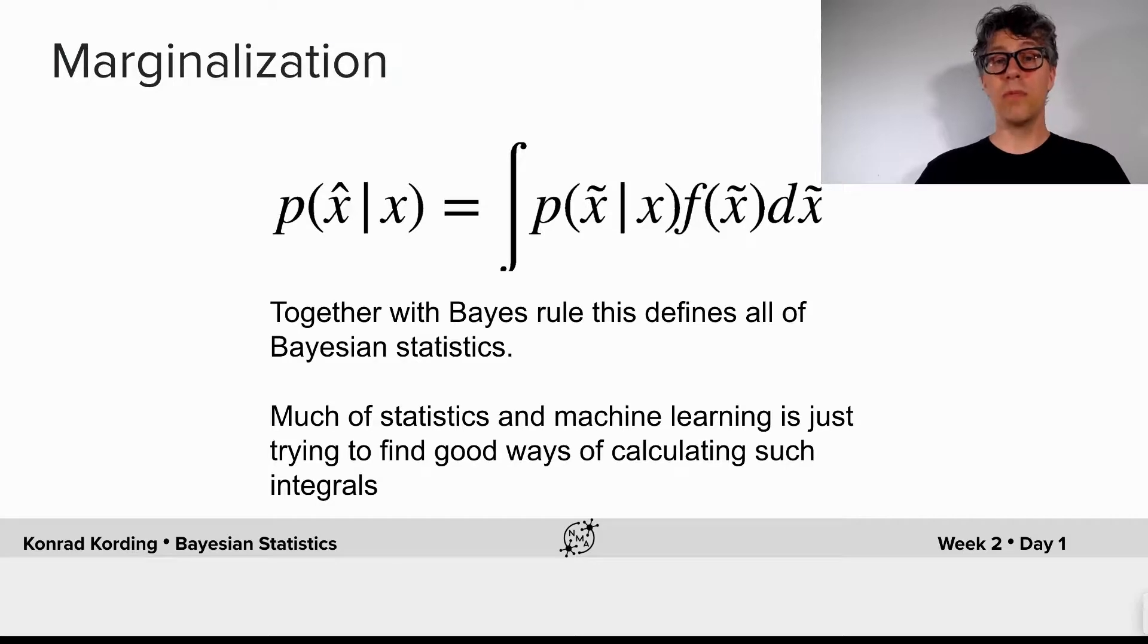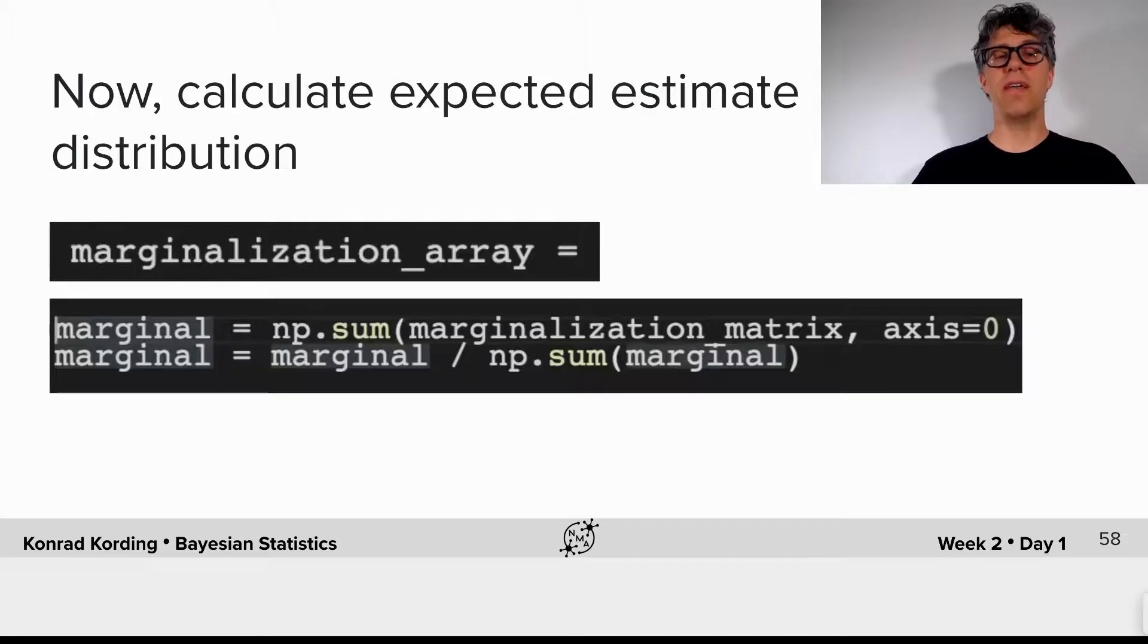But because we're in a low-dimensional space, we can now do that very efficiently. You can now calculate the expected estimate distribution. You need to calculate the marginalization array, and then marginalization is easy. We just need to sum along the marginalization matrix and then normalize it.